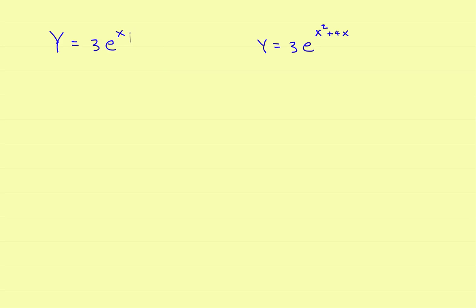Let's look at this first example. This is just a simple x, so all the derivative is going to be y prime. I've got the constant three — the derivative of e to the x is e to the x, and I'm finished. That's all there is to it.